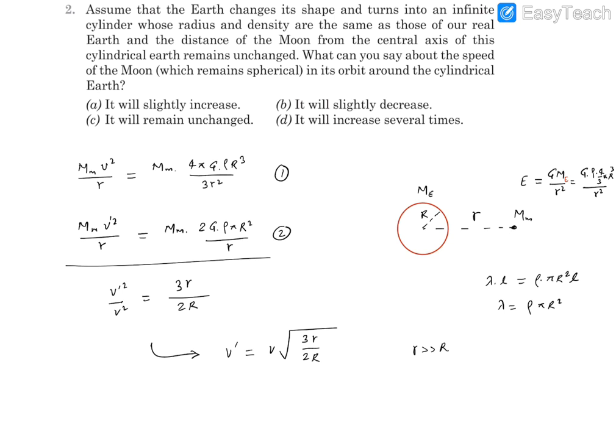We can calculate this lambda. If we consider any length of that cylinder, that mass is going to be lambda l. The same mass can be written in terms of volumetric density rho into pi r squared into l. From here you can find that lambda, the linear mass density, can be said as volumetric mass density into pi r squared. So this lambda has been substituted over here.